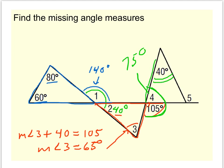So in this last triangle, angle 5 is another exterior angle, and the exterior angle is the sum of the two remote interiors. So 40 and 75, together angle 5 should be 115 degrees.